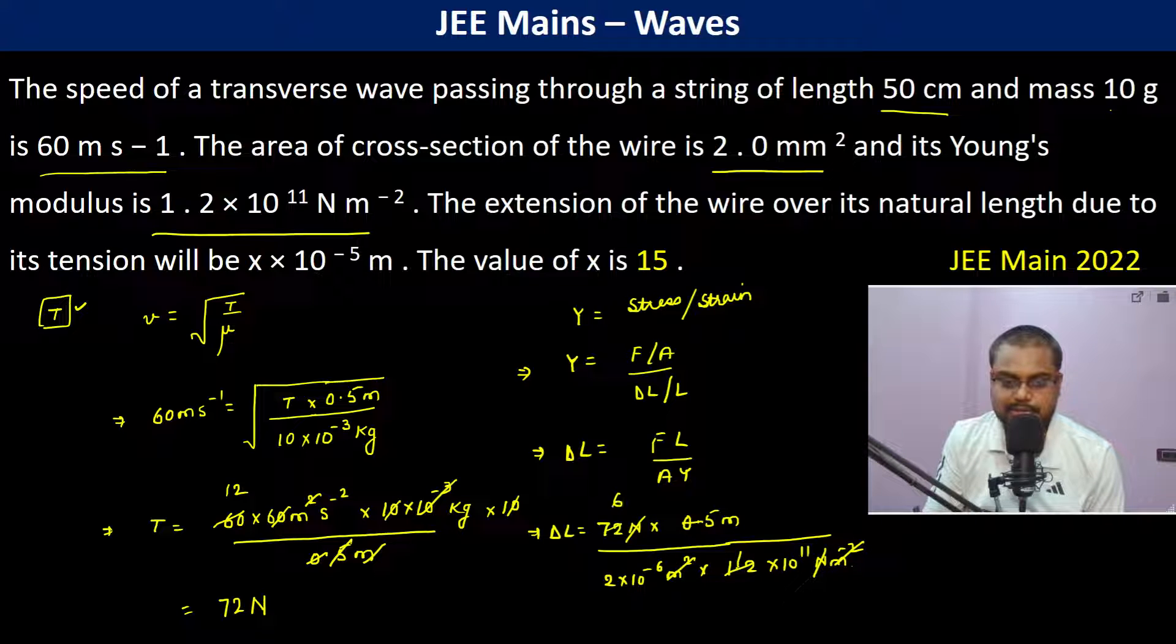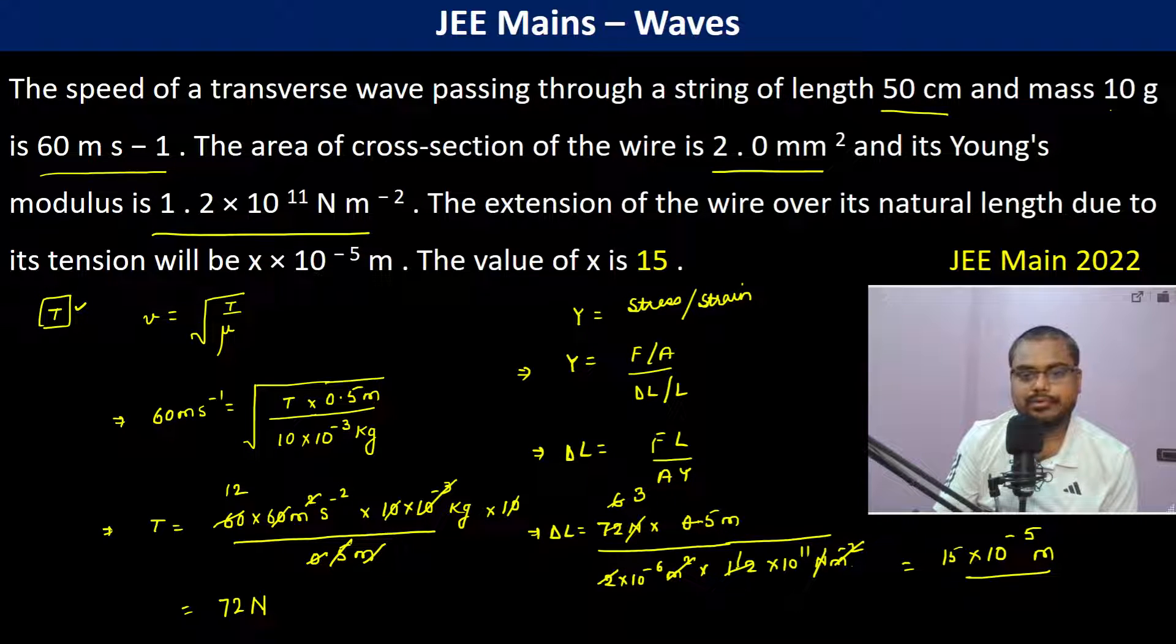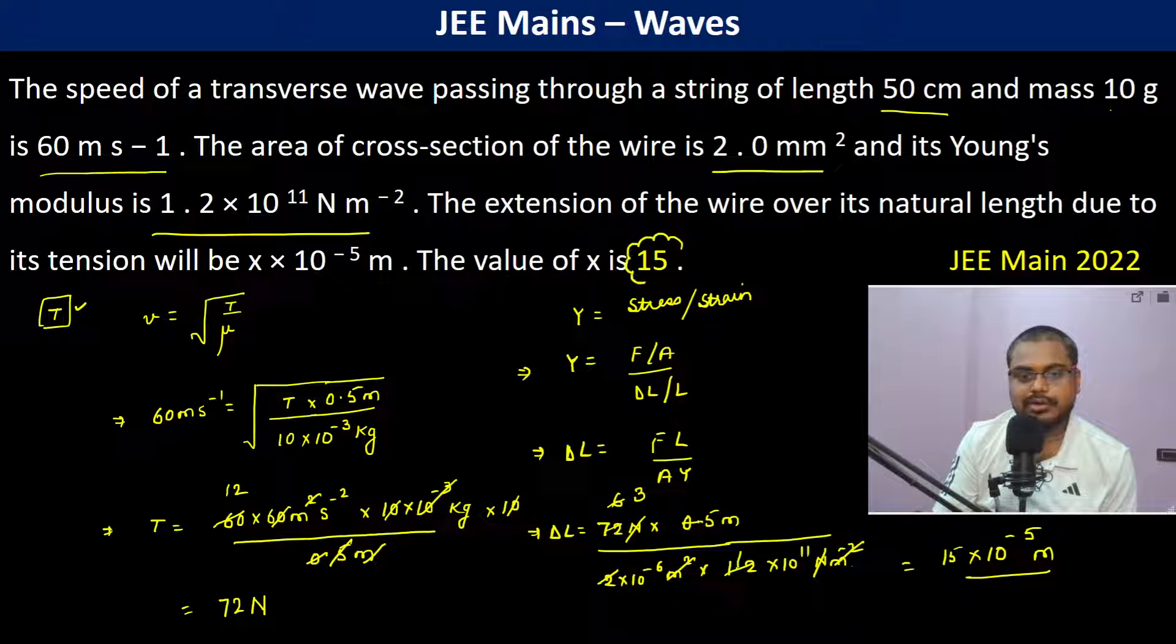It's 6 and this becomes 3, so this is 15 into 10 to the power minus 5 meters. Therefore the value of x, which is already given here, is 15.